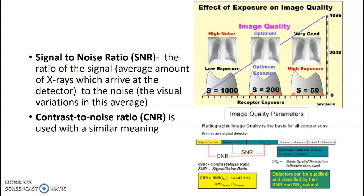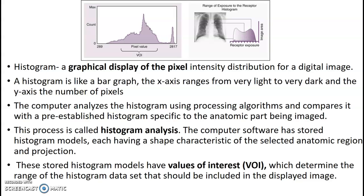Signal to noise ratio — SNR or CNR — is the ratio of the signal (the x-rays that get to your image receptor) compared to the amount of noise. A histogram is a graphical display of the pixel intensities distributed on the image. When you choose a setting on your control panel, like PA chest or PA hand, each setting has a graph for the expected pixel values and gray values within that image, which is why it's important to choose the correct settings.